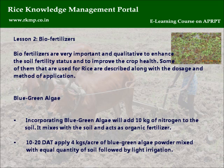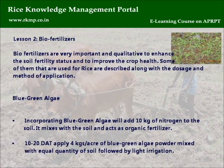Blue-green algae: Incorporating blue-green algae will add 10 kg of nitrogen to the soil. It mixes with the soil and acts as organic fertilizer. Apply 4 kg per acre of blue-green algae powder mixed with equal quantity of soil at 10 to 20 DAT, followed by light irrigation.